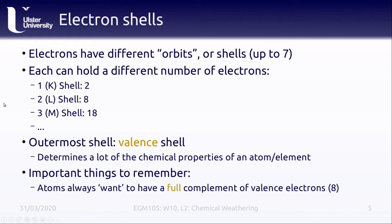The outermost shell of electrons is known as the valence shell. Atoms want to have a full valence shell because this is the most stable configuration for them. This tendency to gain or lose electrons to fill a valence shell is what gives atoms their chemical properties. The full complement of valence electrons is eight, so atoms either add electrons to get up to eight, or lose electrons to get down to eight — which direction they go determines a lot of their chemical properties.